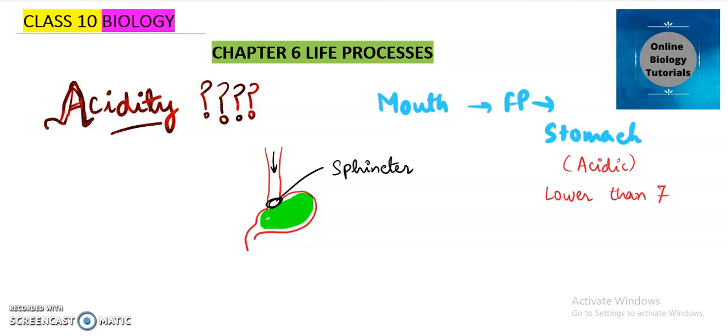Sphincter opens whenever food has to pass from esophagus to the stomach. Sometimes what happens is this sphincter opens and as a result of it the acid which is there in the stomach comes in the esophagus.